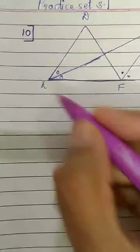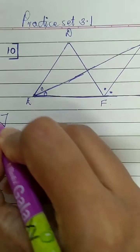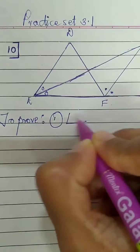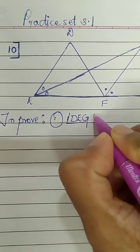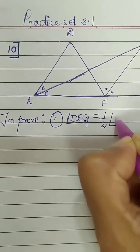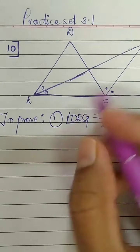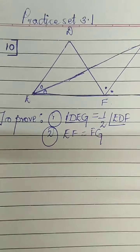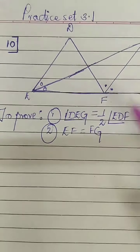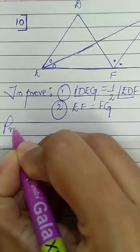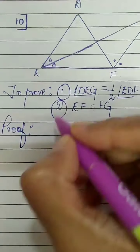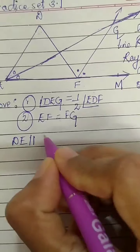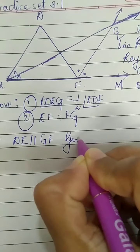Now we come to the main question. To prove, we have two things: first, angle DEG is equal to half of angle EDF. Second thing to be proved is EF is equal to FG. We will think about the second thing later. Let us first write the proof for the first.